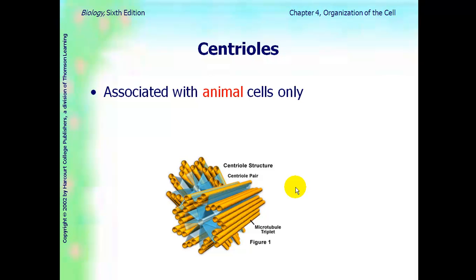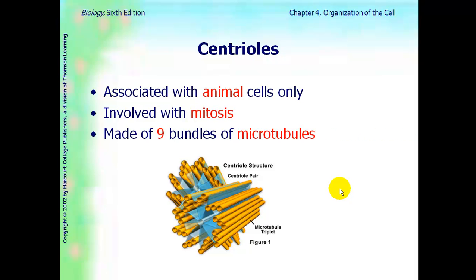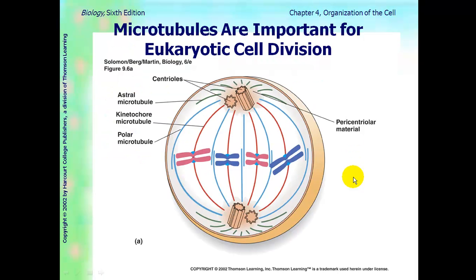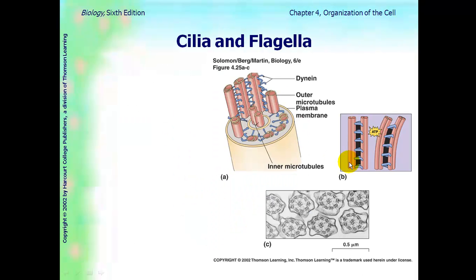Centrioles are associated with animal cells only. They're always in pairs and are involved with mitosis. They're made of nine bundles of microtubules and are located near the nucleus. Microtubules are important for eukaryotic cell division — the centrioles are what make the spindle fibers.